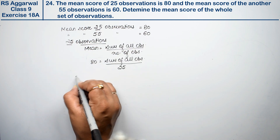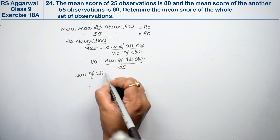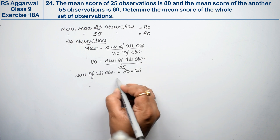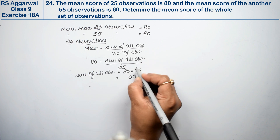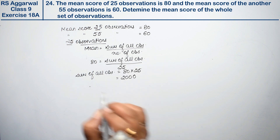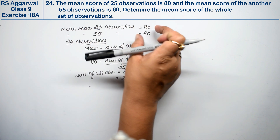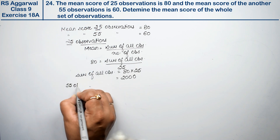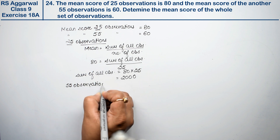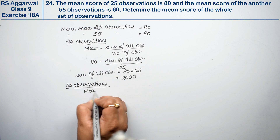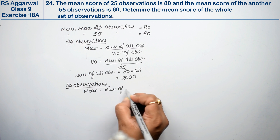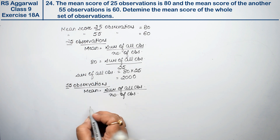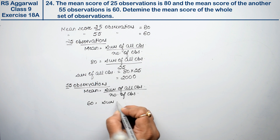Number of observations is 25. So sum of all observations equals mean multiplied by number of observations — that is 80 times 25 equals 2000.